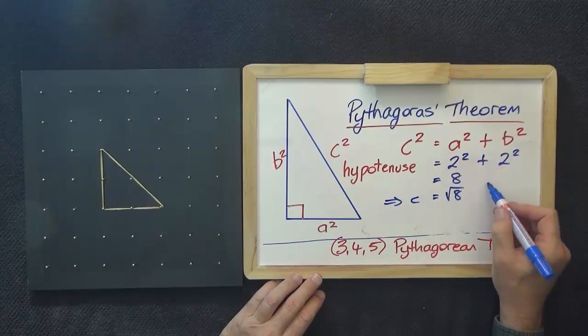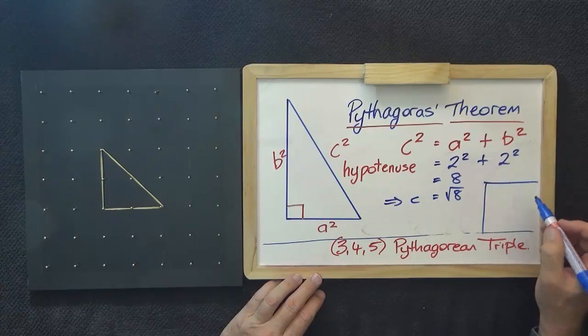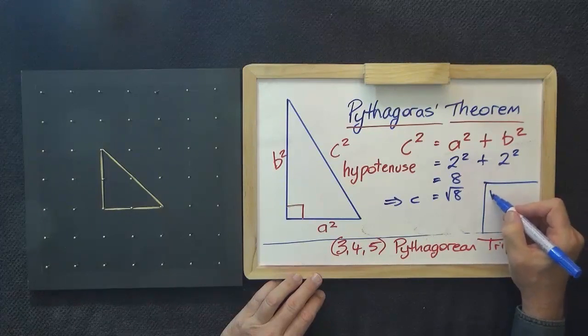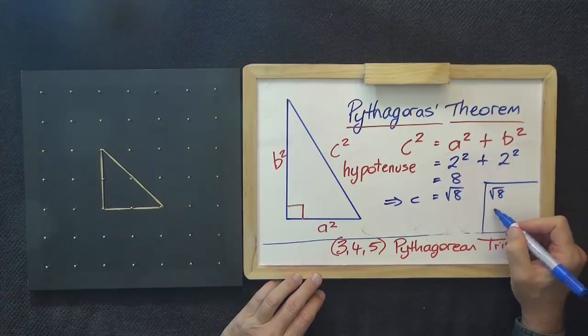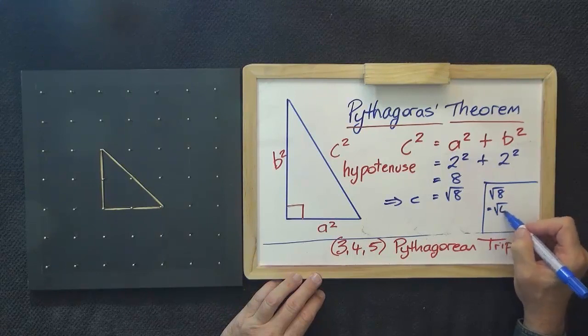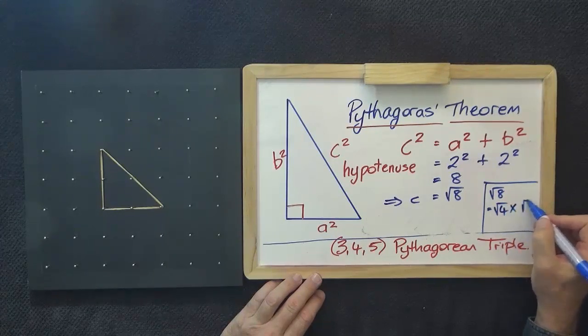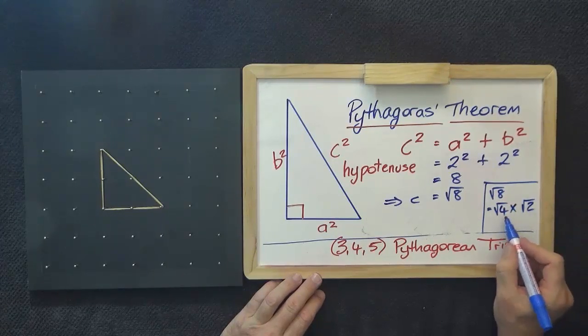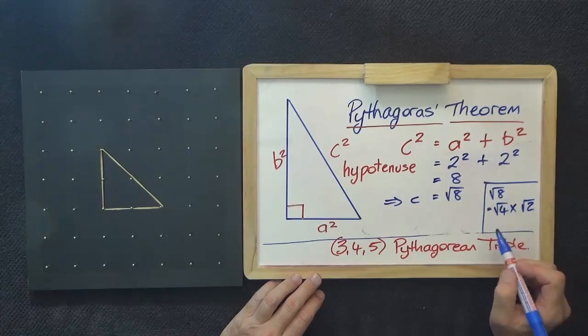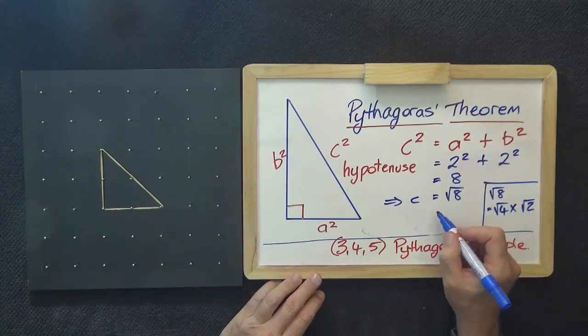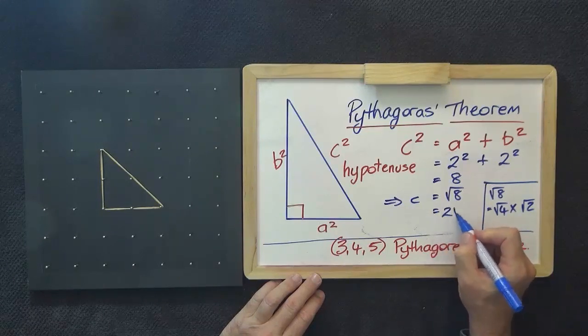But again, your rules of indices will tell you that root 8 equals root 4 times root 2. And you see, I've seen that there is a square number underneath my radical. So this should be written as 2 root 2.